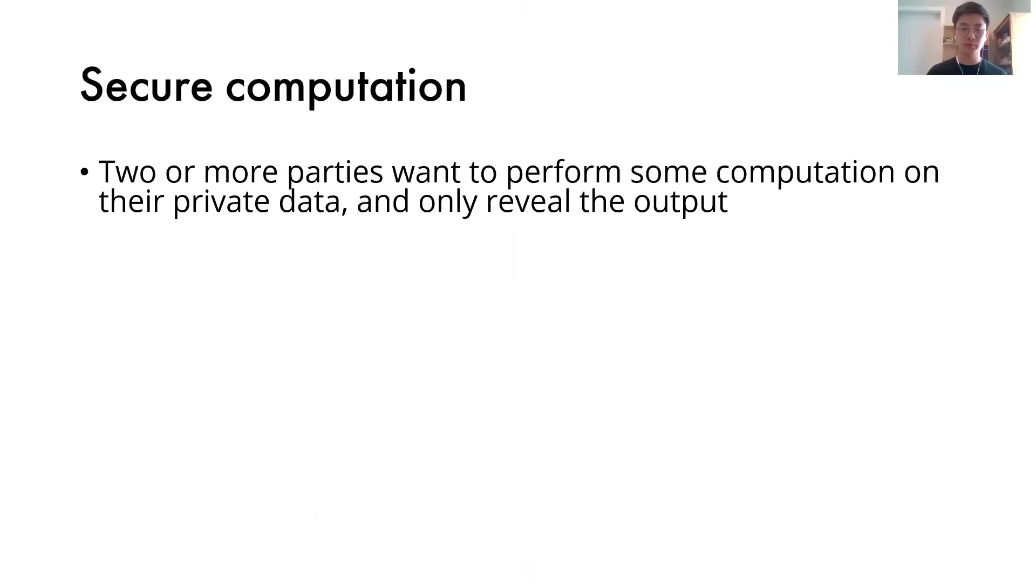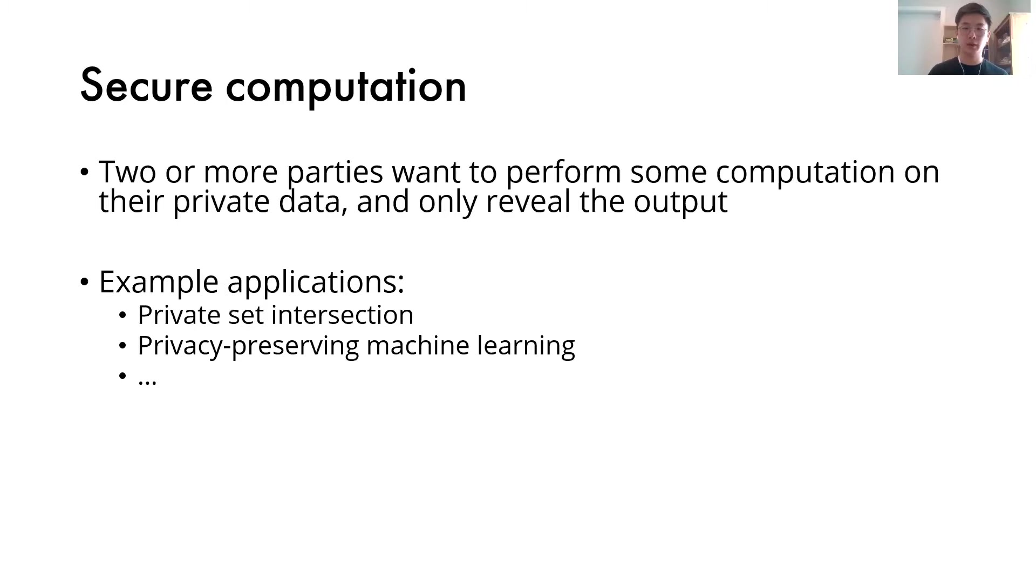First, let me give some background on Secure Computation. Secure Computation refers to the scenario where two or more parties want to perform some computation on their private data and only reveal the output. Example applications include private set intersection, privacy preserving machine learning, etc.